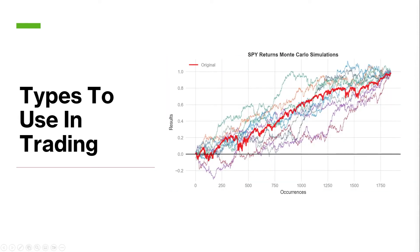Next, let's look at the types to use in trading. Monte Carlo is a great tool that can help you test the robustness of your trading strategy and give you key performance metrics to work with. For example, you can get a better understanding of your risk of ruin, annual rate of returns, drawdown ratios, and maximum and median drawdowns. When you have this important information at your fingertips, you'll be in a much better position to make informed decisions about your trading strategy, capital allocation, and position sizing.